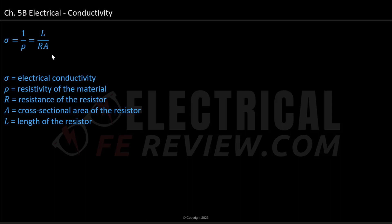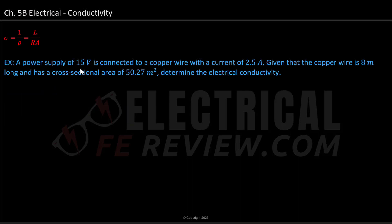Let's go ahead and look at an example. For our example, we have a power supply of 15 volts connected to a copper wire with a current of 2.5 amperes. Given that the copper wire is 8 meters long and has a cross-sectional area of 50.27 meters squared, we need to determine the electrical conductivity.